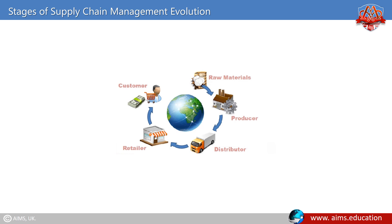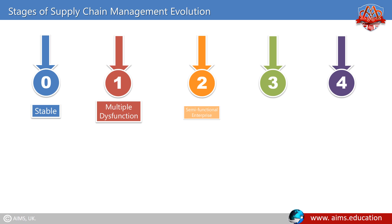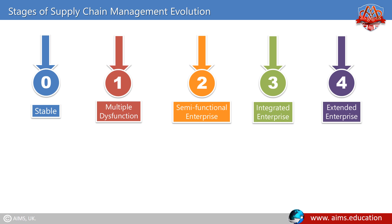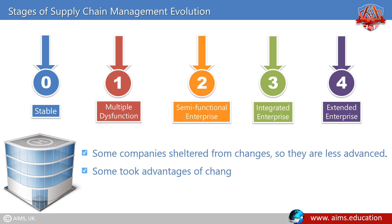The advances in supply chain management are reflected in each supply chain's development. There are typically four or five sequential stages globally and within organizations, starting from stage 0 to 4: stable multiple dysfunction, semi-functional enterprise, integrated enterprise, and extended enterprise. Every organization falls somewhere within these five stages — some companies sheltered from changes are less advanced, some took advantage of changes, and some believe they are in the most advanced stage.